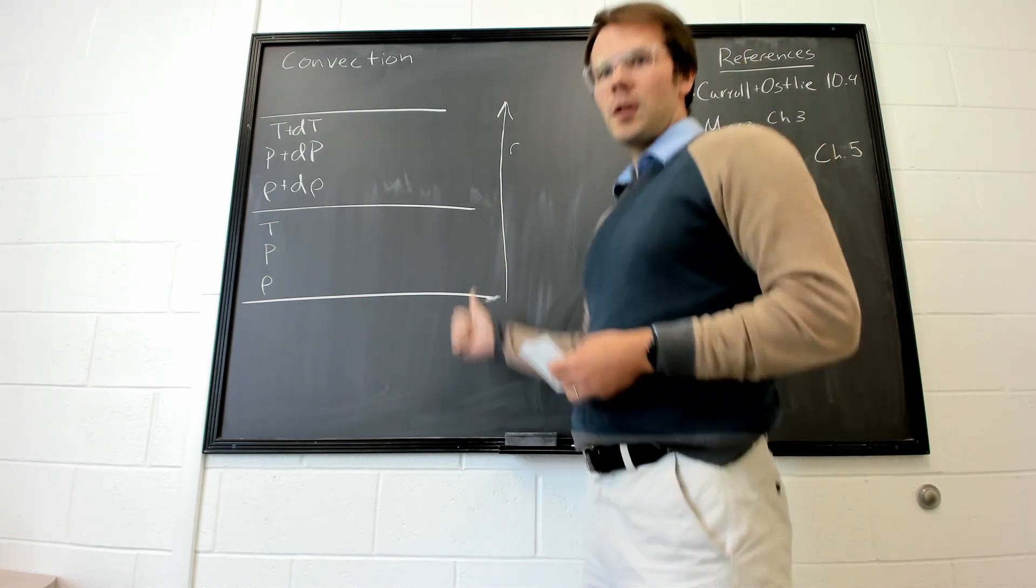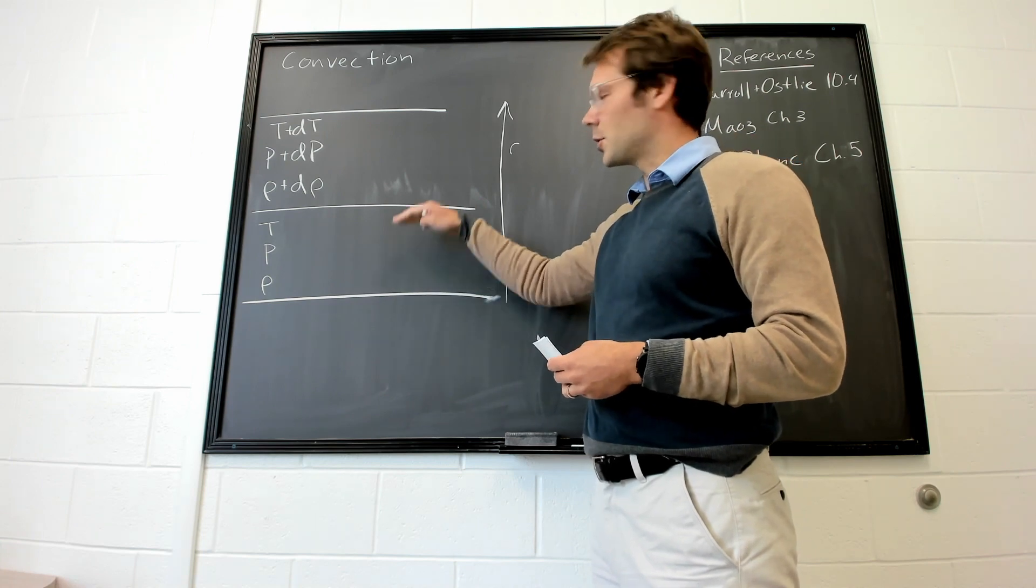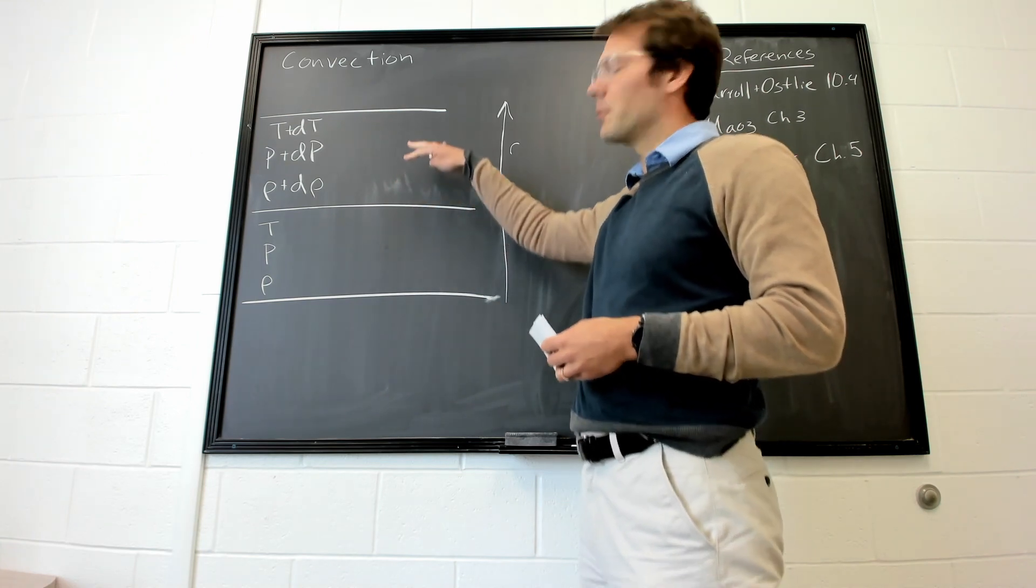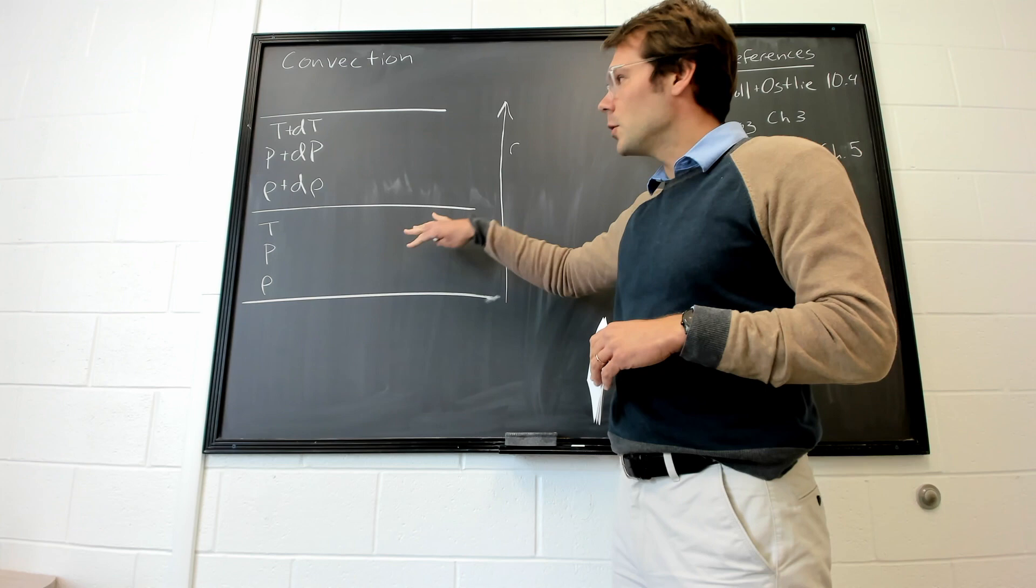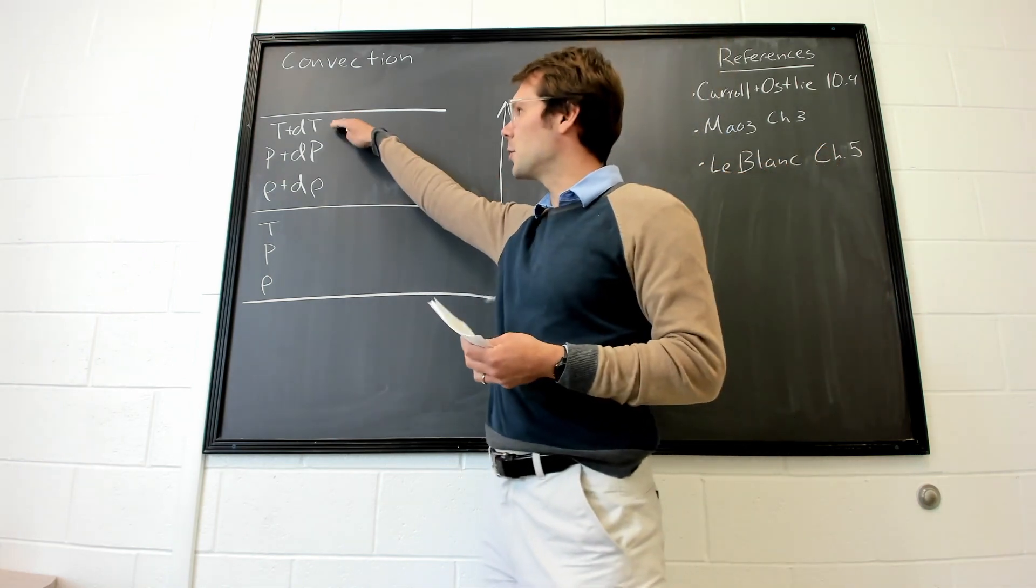With a stellar atmosphere, this is just meant to show some region and then some region slightly higher up. Usually, the slightly higher up region, we have a lower temperature, a lower pressure, and a lower density.